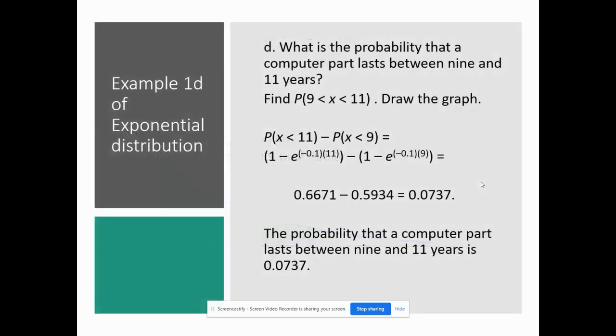So 1D – what is the probability that a computer part lasts between 9 and 11 years? So that's what that probability looks like – probability of 9 is less than X is less than 11. So I'm going to draw the graph, which I'll show you in just a minute. So I'm going to solve it. Remember this is a less than – and if you go back, remember the less than.